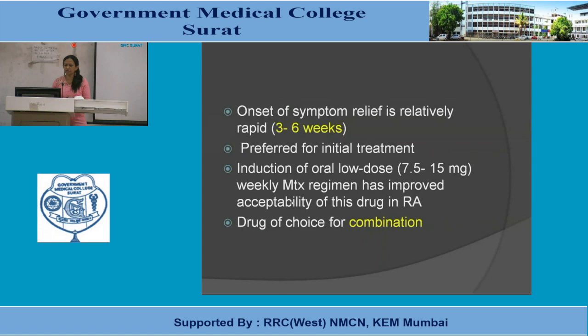Methotrexate is initiated at an oral low dose of 7.5-15 mg weekly. It is the drug of choice for combination therapy in RA, as most cases require combination regimens. Methotrexate is a core component due to its rapid onset of symptomatic relief.